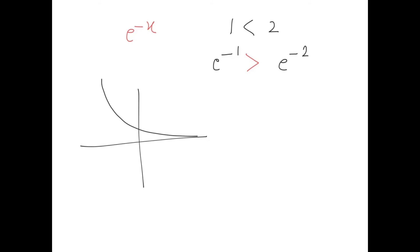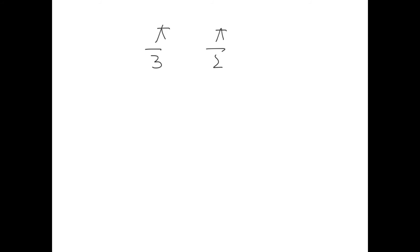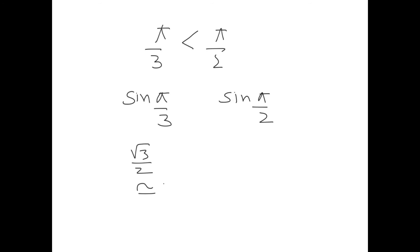Not all functions are always increasing or decreasing, so what do we do in such cases? Take the example π/3 and π/2, where π/3 is less than π/2. If I apply the sine function to both sides, I get sin(π/3) and sin(π/2). sin(π/3) is √3/2, approximately 0.85, and sin(π/2) is 1. Clearly √3/2 is less than 1, so the inequality did not change.